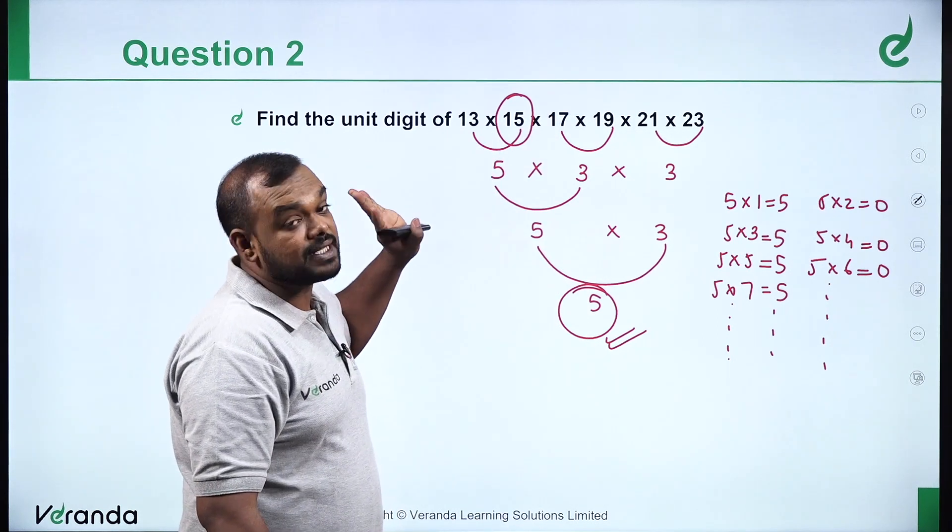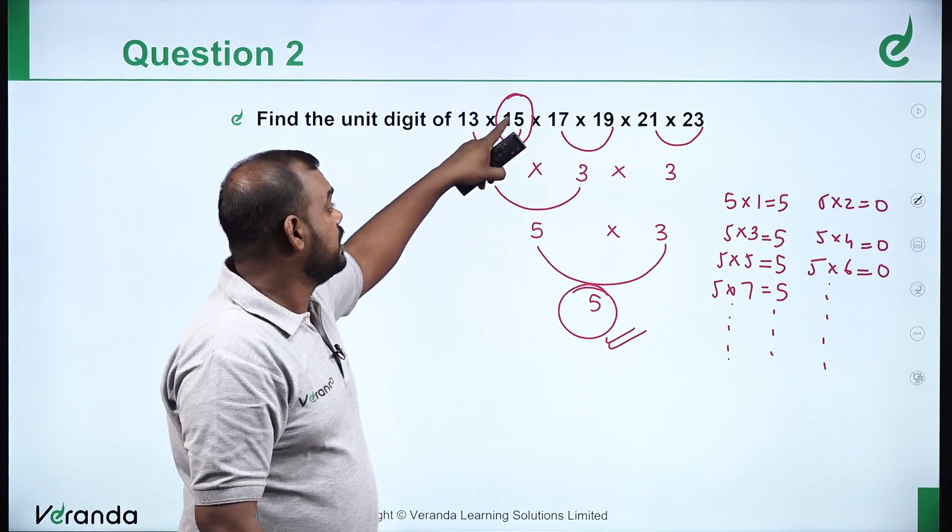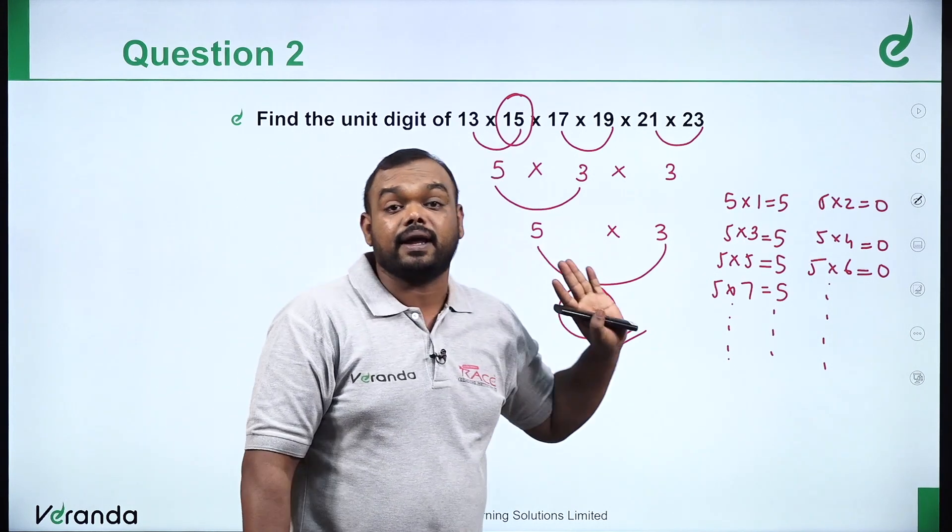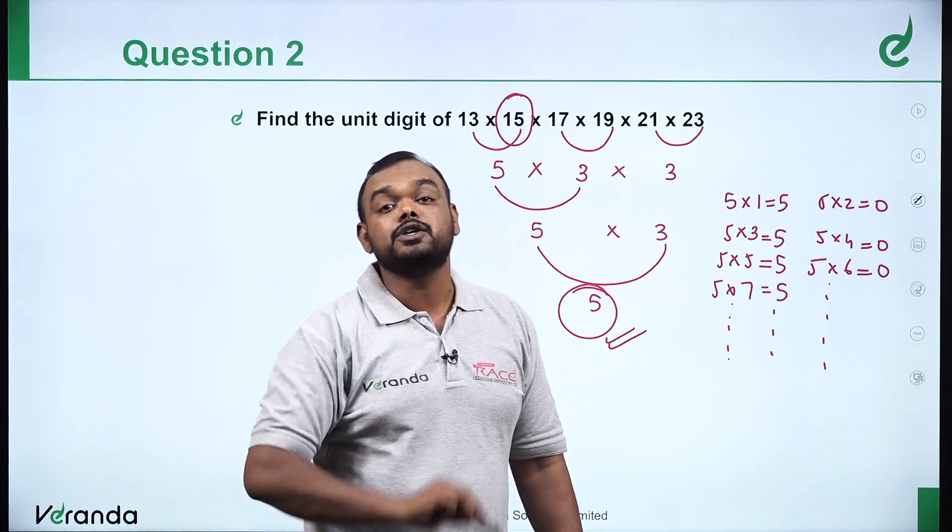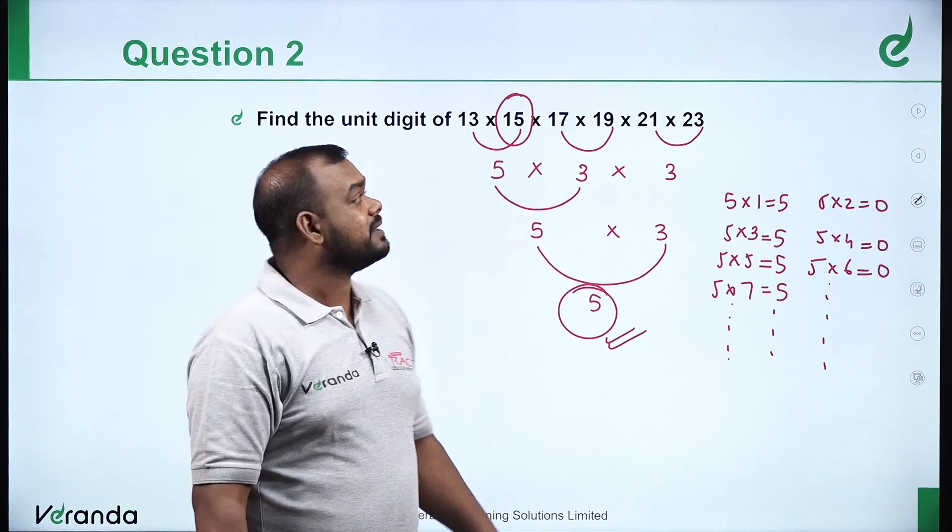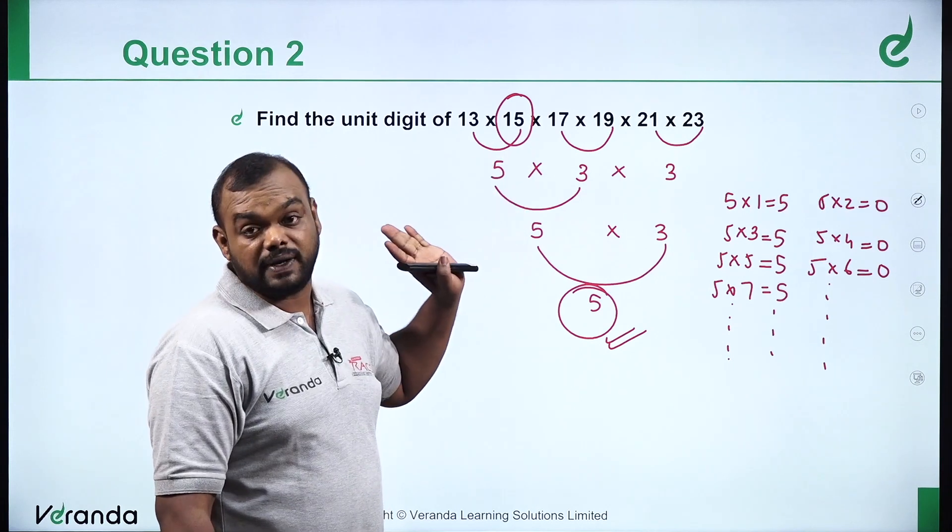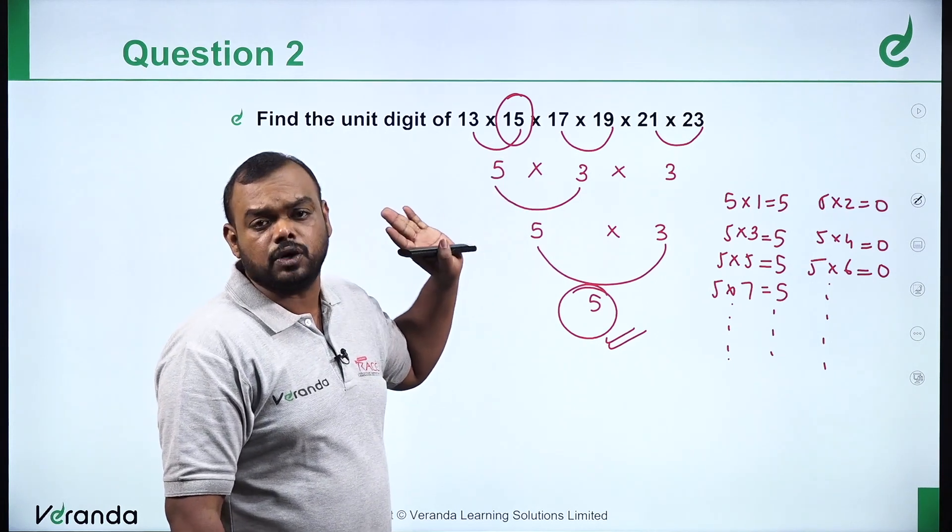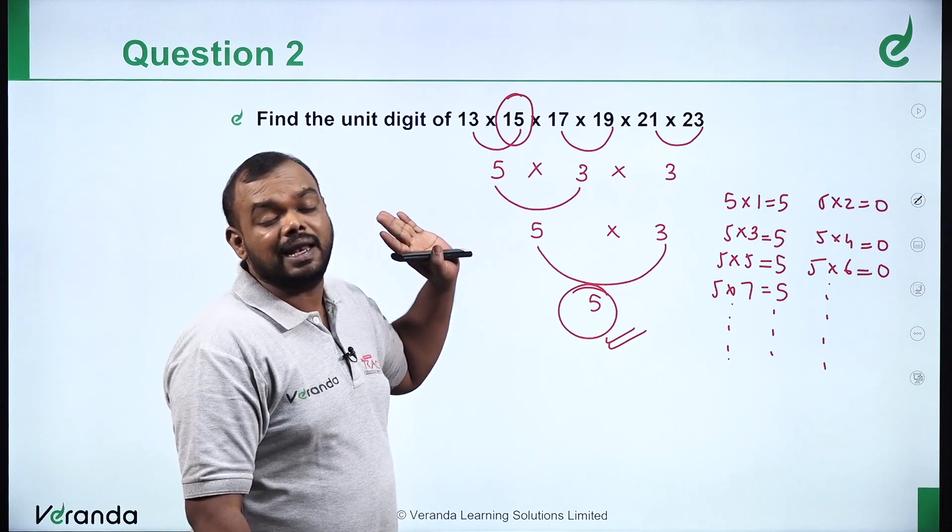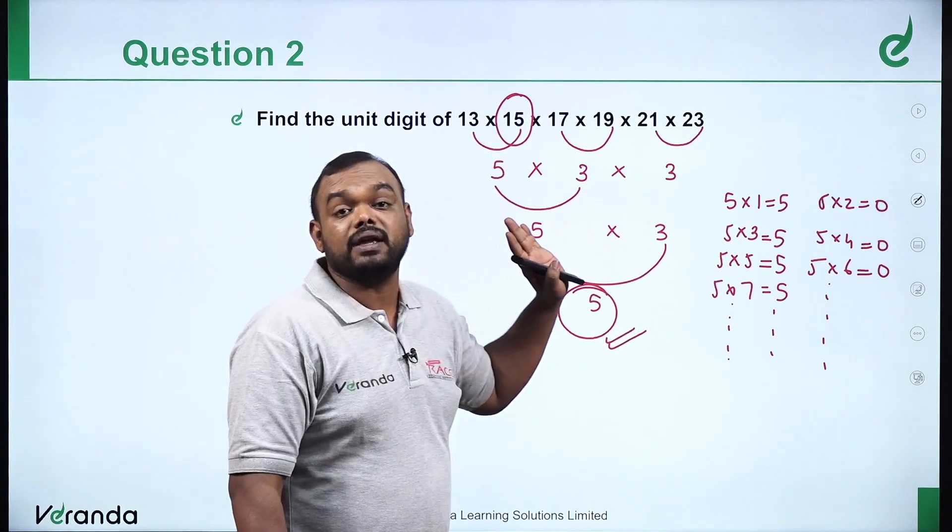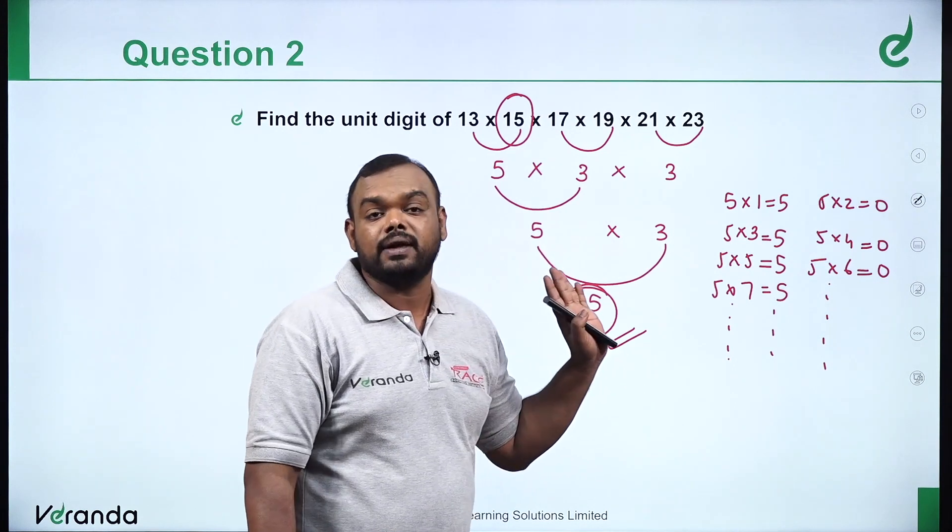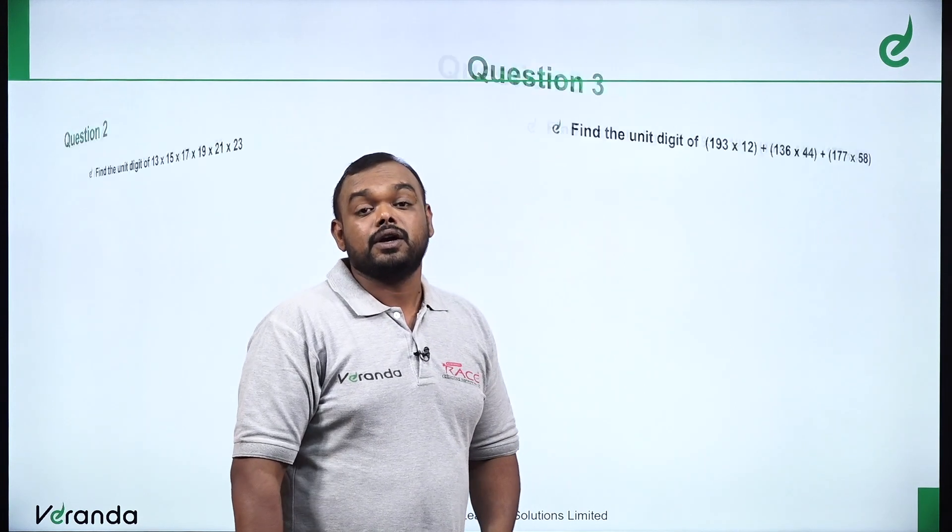This is the deciding factor here. If you have this problem, if you have this number, the answer is either 5 or 0. If at least one even number is there, the entire output is 0. If it is all odd numbers, that means 5 into odd is always 5. As simple as that.